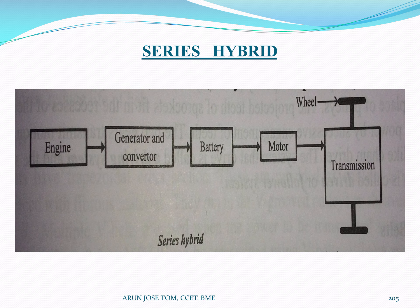The first arrangement is a series hybrid. In this diagram, we have one engine that operates a generator. The generator produces electricity, which is stored in a battery. The battery then powers the wheel through the motor.